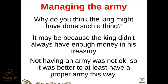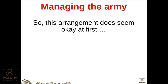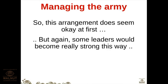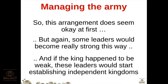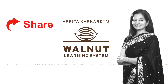Not having an army was not acceptable, so it was better to at least maintain a proper army this way. This arrangement seemed okay at first - every decision has advantages and disadvantages. But again, some leaders would become really strong. Like superheroes or villains in movies who grow more powerful and try to rule the world, some leaders would start feeling really strong. If the king happened to be weak, these leaders would start establishing independent kingdoms.